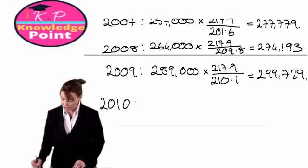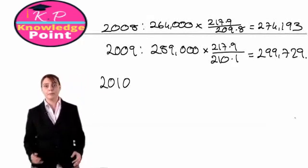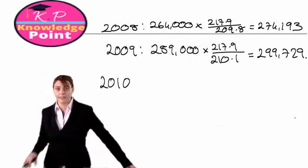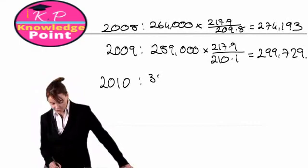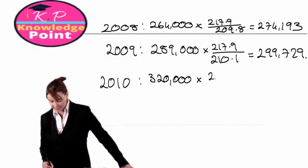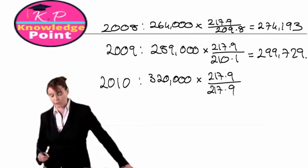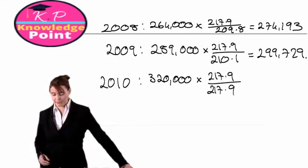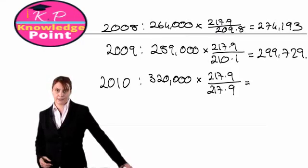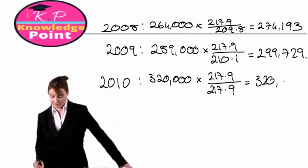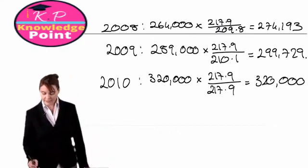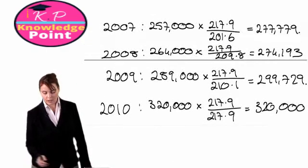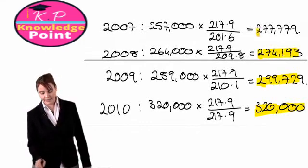We could do the calculation for 2010, but because 2010 is our reference year, there won't actually be any adjustment to the 2010 sales figure — we're just multiplying by the RPI in our reference year divided by the RPI in 2010. Doing this gives us a more meaningful comparison of our sales figures year on year.